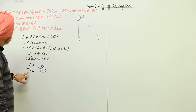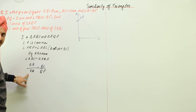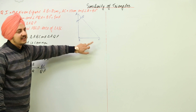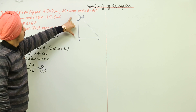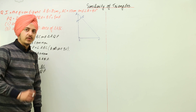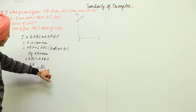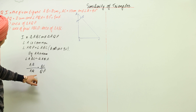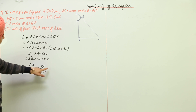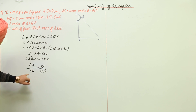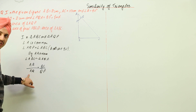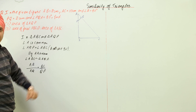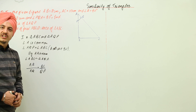We know AB equals 8 centimeters. We need to find AQ. We can find BC using the Pythagoras theorem since we know both AB and AC. We also know QP equals 2 centimeters. So knowing AB, BC, and QP, we can find AQ.